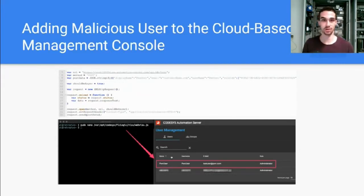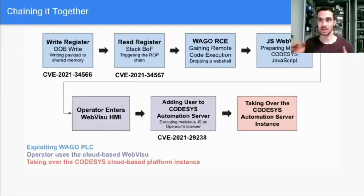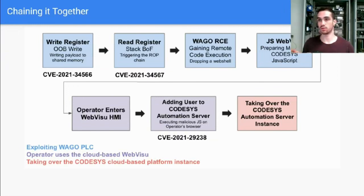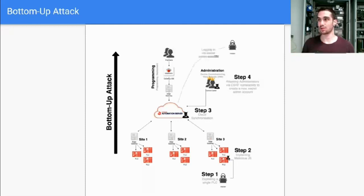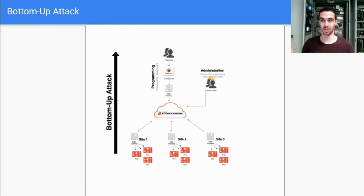This gives us a new user in our control in the cloud. To put it all together: we start with a read and write register buffer overflow that gains us remote code execution on the WAGO PLC, then we change the JavaScript to create a new user in the cloud, and we use that cloud access to take over the entire operation — starting from the PLC, going up to the cloud, and using that to manage and control the entire operation.